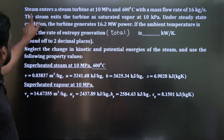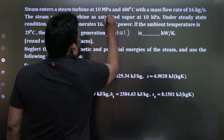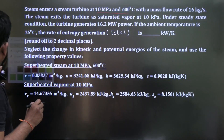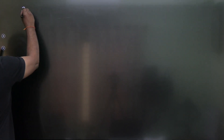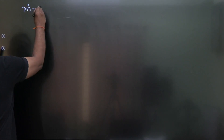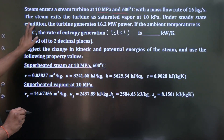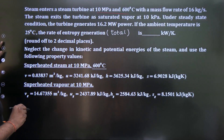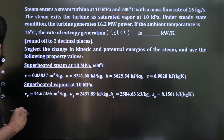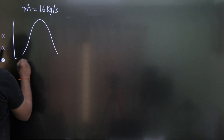First question: steam enters a turbine at 10 megapascal and 600 degrees centigrade with a mass flow rate of 16 kg per second. The steam exits the turbine as a saturated vapor. Generally, steam enters at a superheated state.